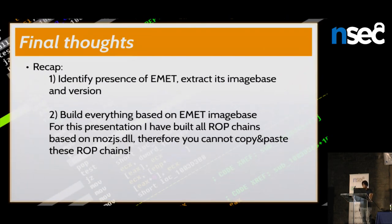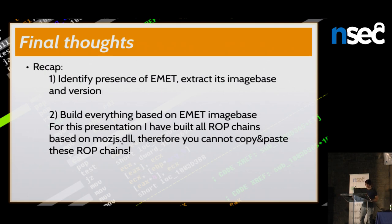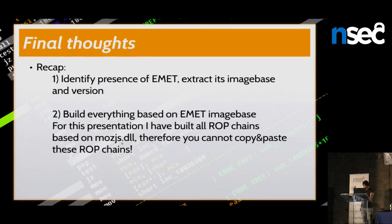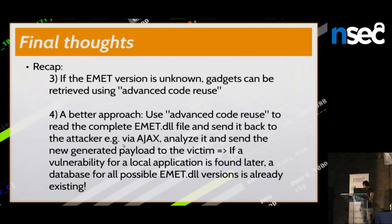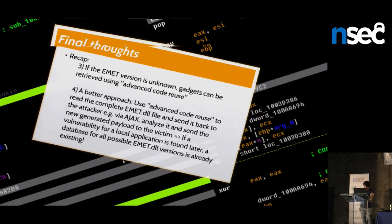Here's a quick recap. First I identified whether EMET is present. Then I extracted the image base and version. Then I built everything on top of EMET DLL. In the slides I've implemented everything based on a mock DLL — I don't want you to be able to directly abuse my code to attack EMET. If the EMET version is unknown, I use the advanced code reuse technique to dynamically find what's needed.